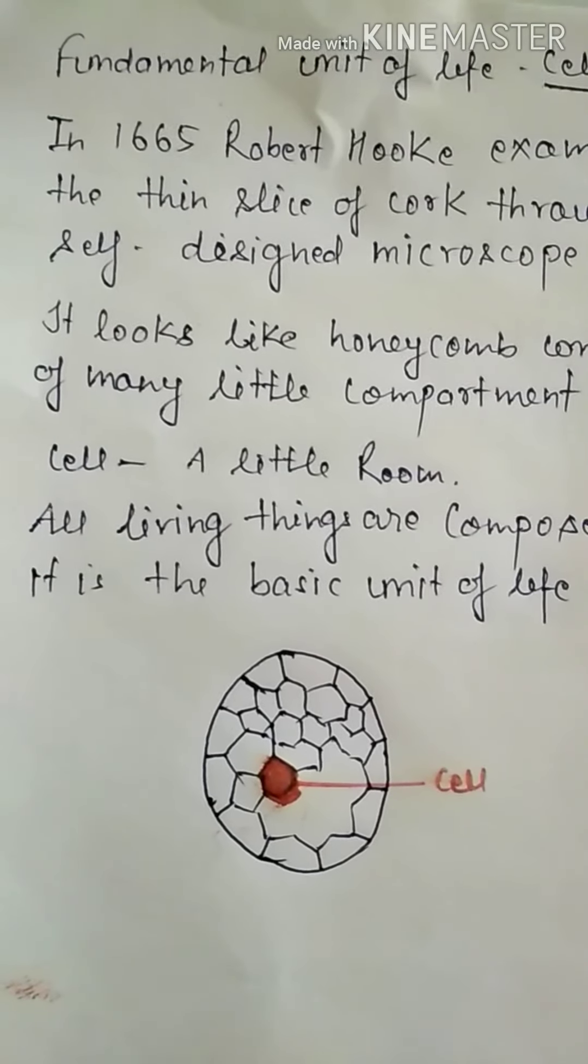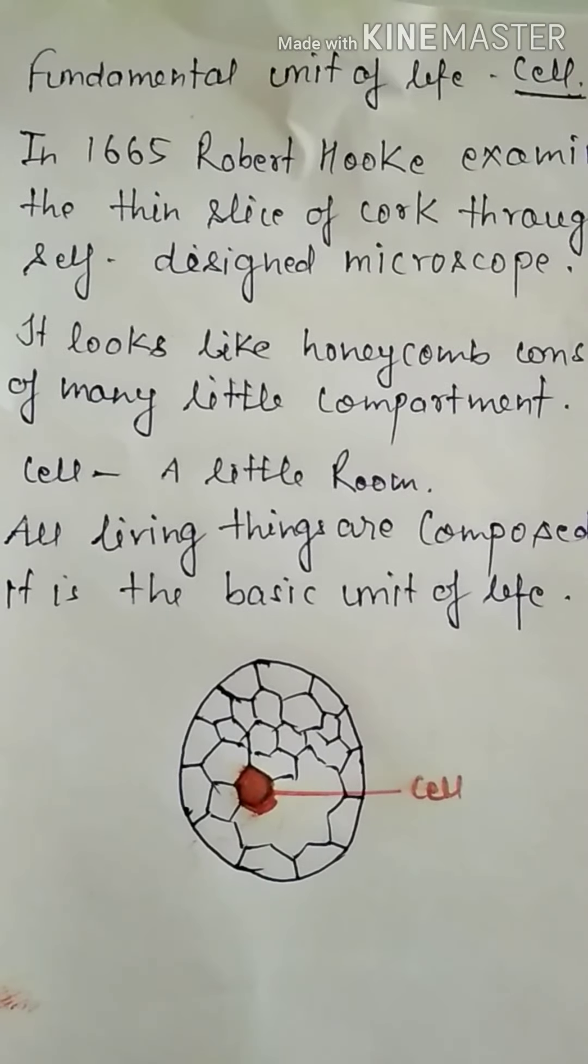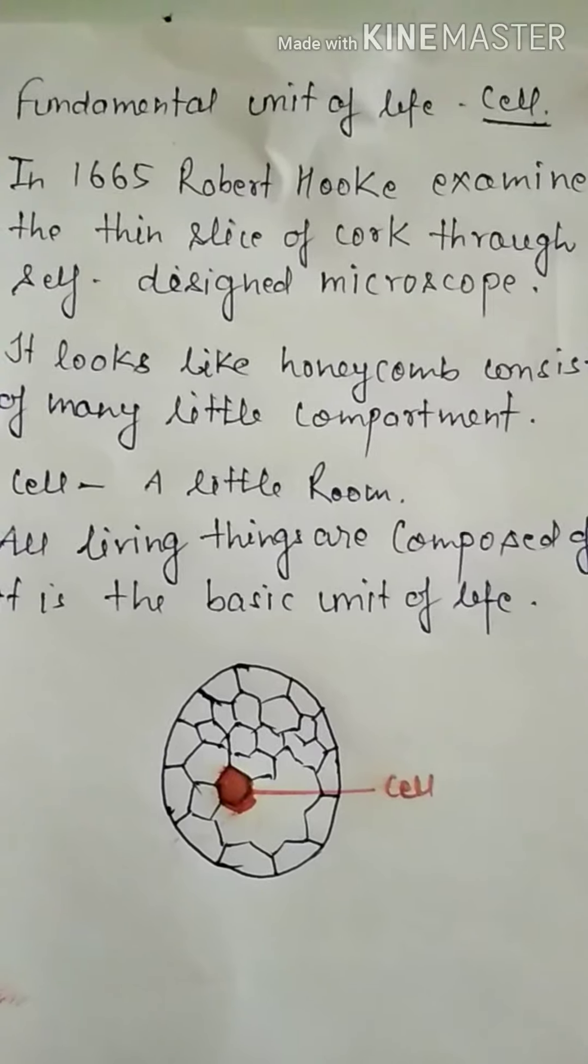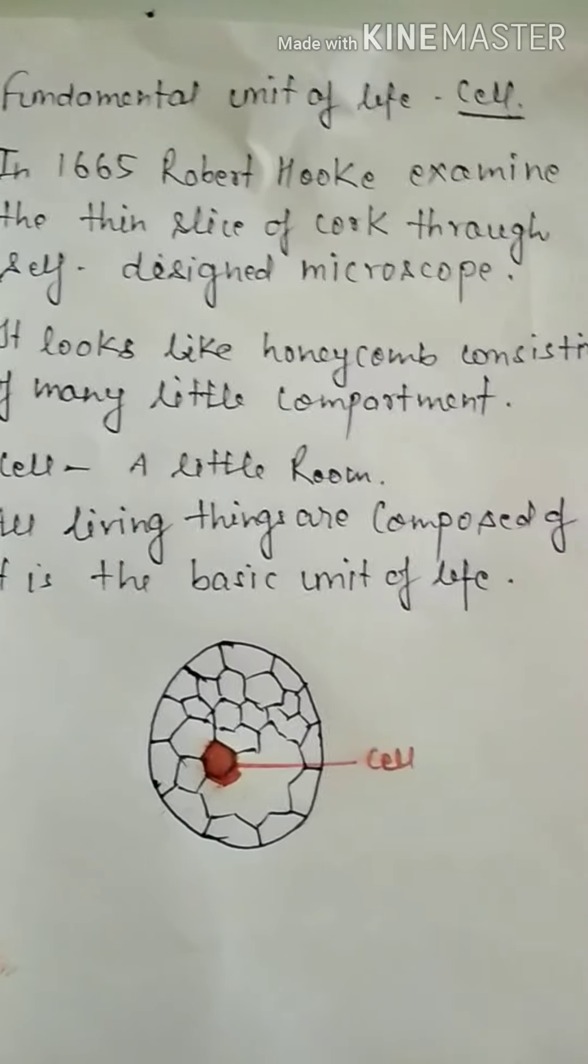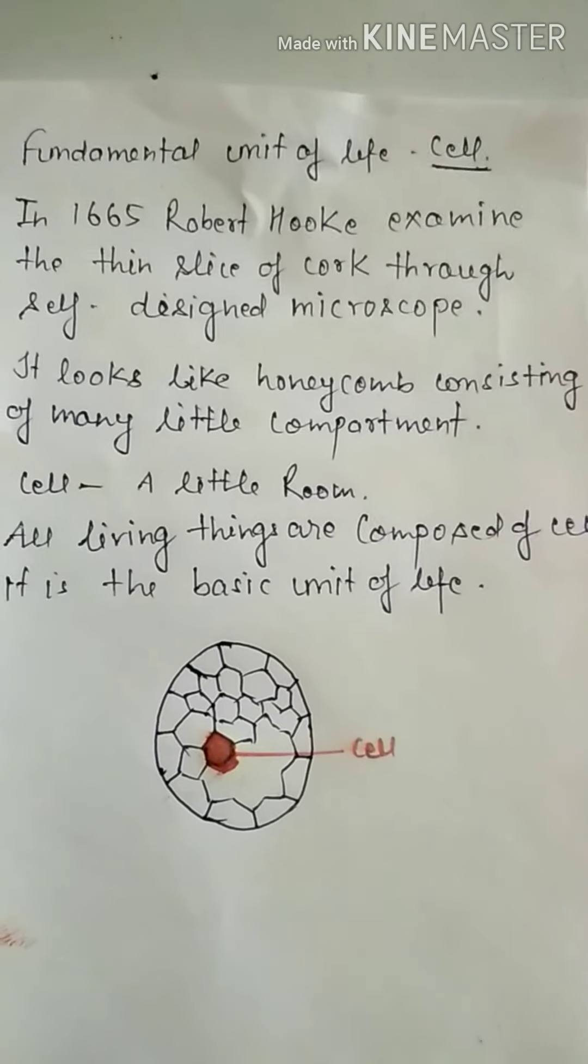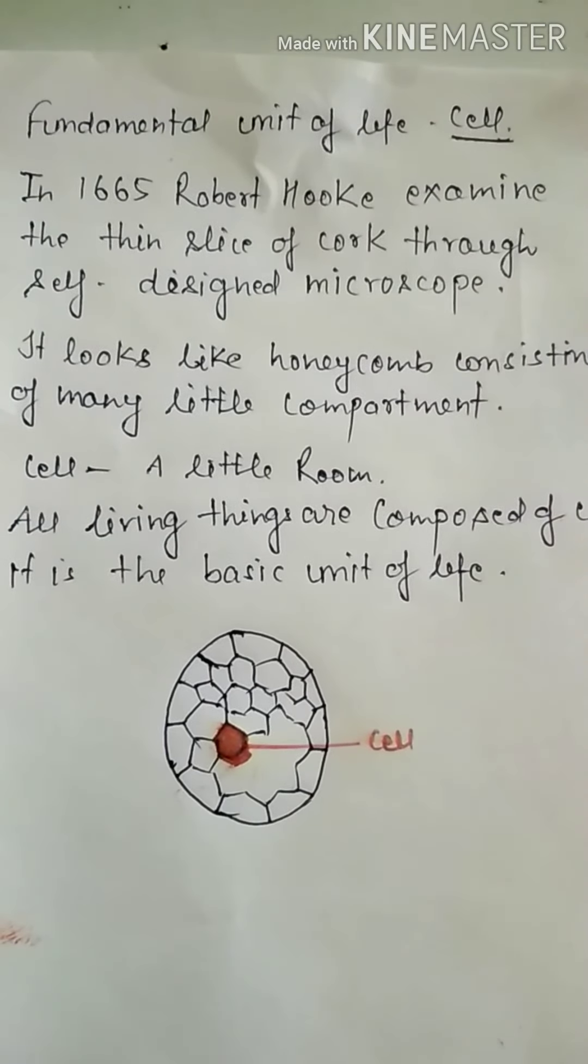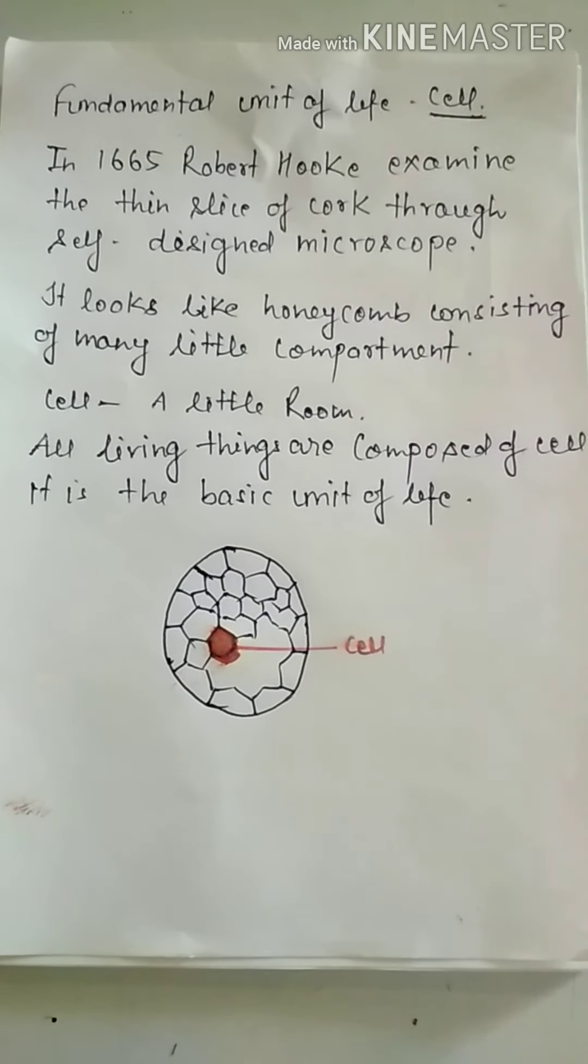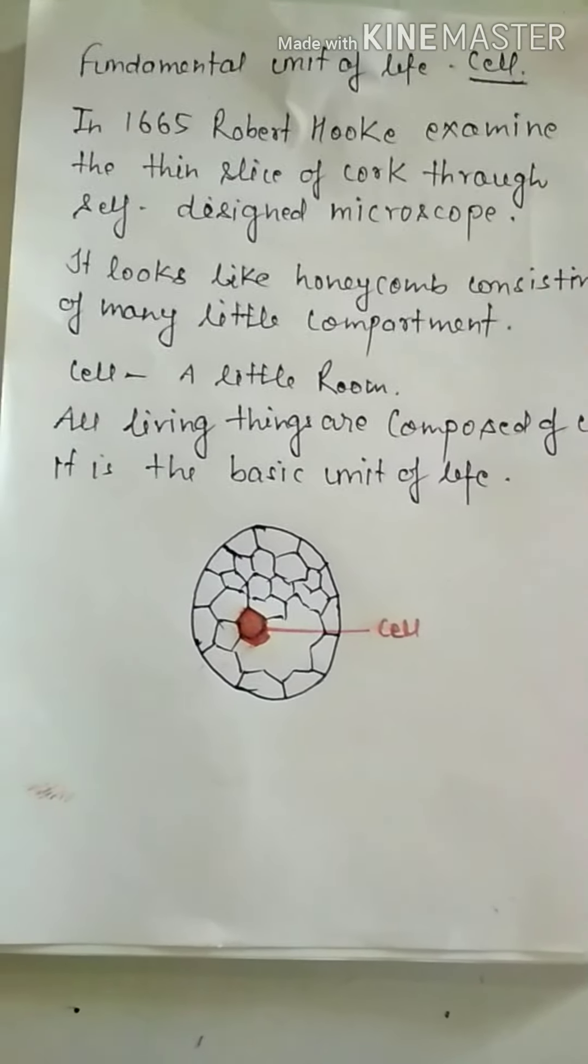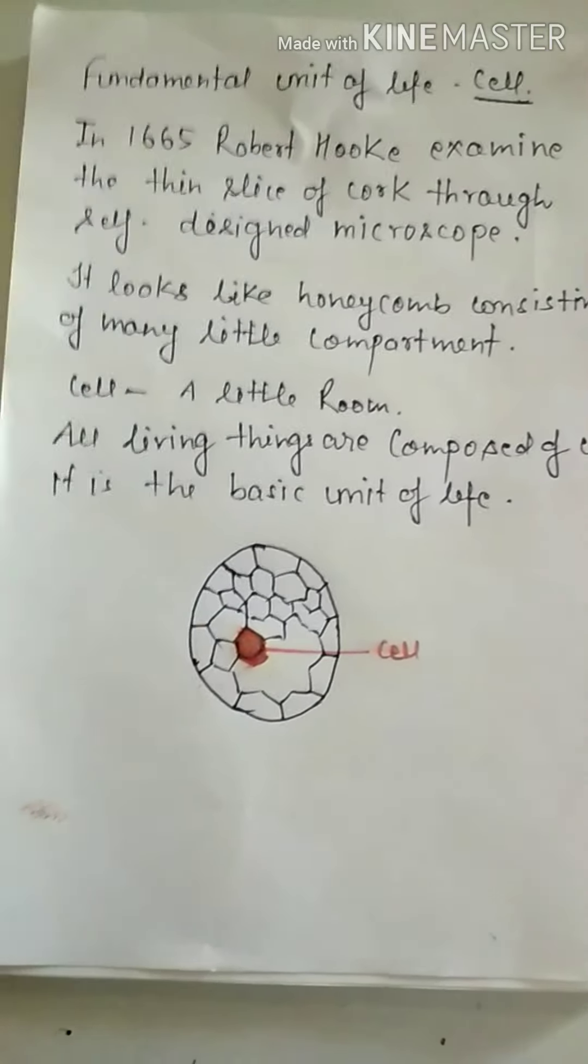Cell is a Latin word, it means a little room. All the living things are composed of cells. It is the basic unit of life. Animals and plants are made up of cells.